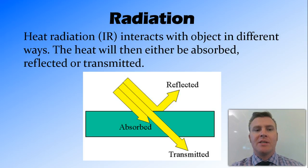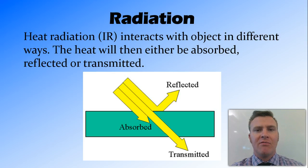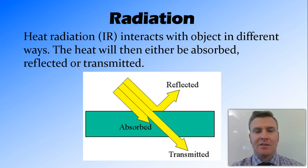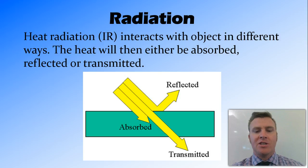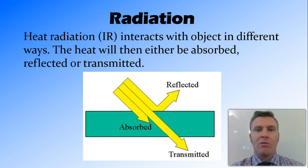Heat radiation is a form of electromagnetic radiation in the infrared spectrum. Another form of electromagnetic radiation is visible light energy, and it works in a very similar way. The heat or energy from radiation can either be absorbed by the material, reflected by the material — meaning it bounces off — or transmitted, meaning it passes through.